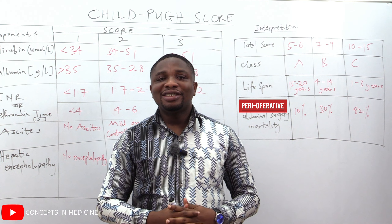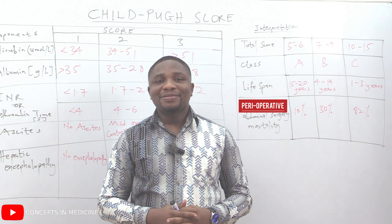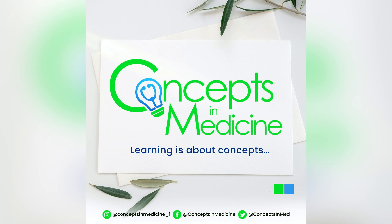The lower the score, the better the outcome and the longer the lifespan. Class A (score 5–6) has a lifespan of 15 to 20 years. Class B (score 7–9) lives four to 14 years. Class C (score 10–15) lives only one to three years. For perioperative mortality of abdominal surgery: Class A carries 10%, Class B 30%, and Class C 82%.